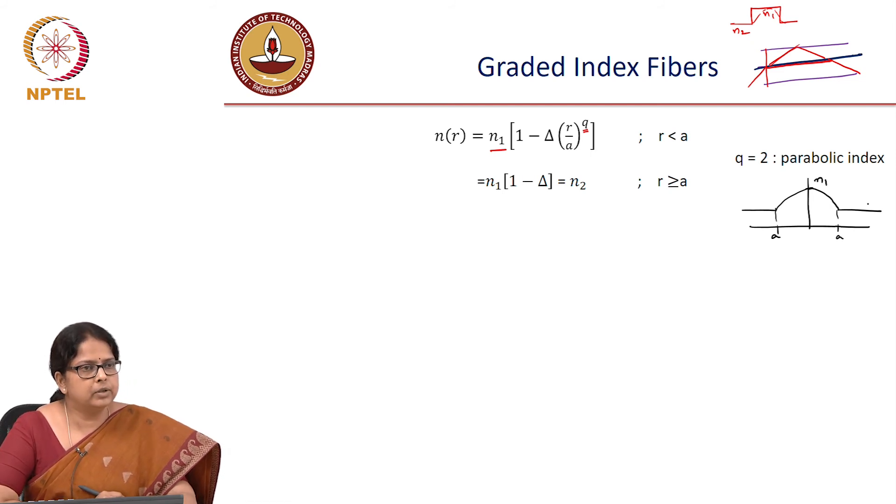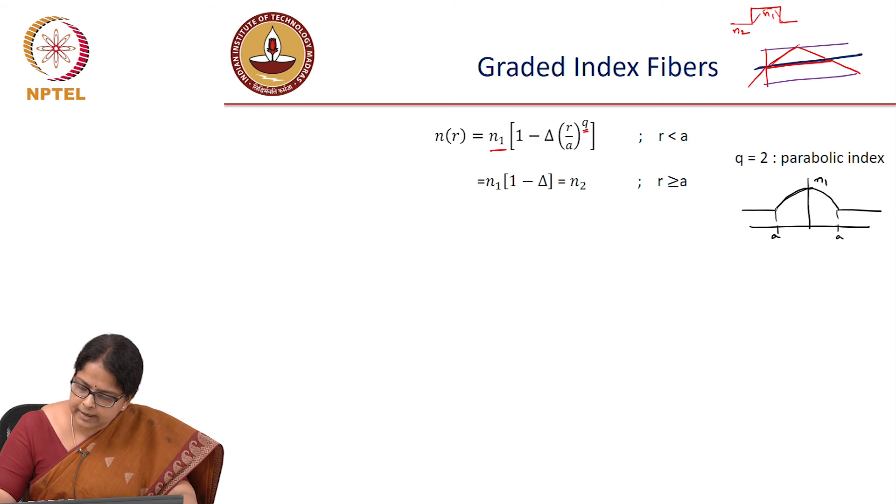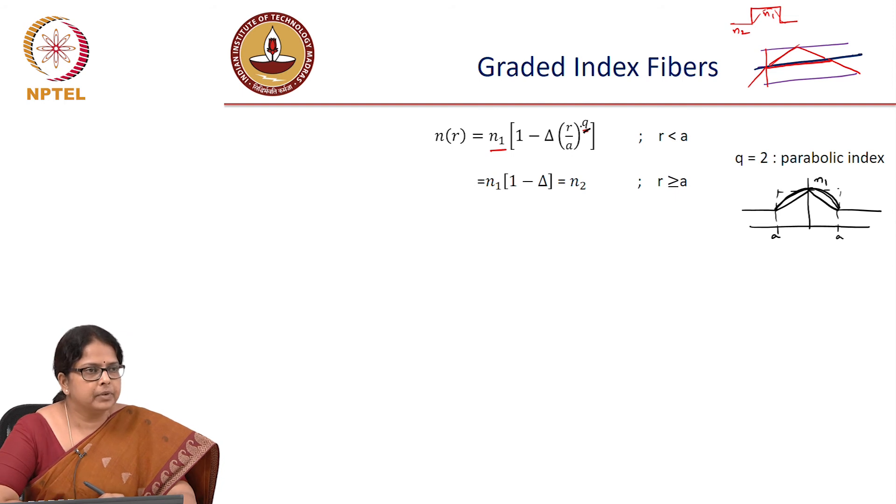So the refractive index profile of a graded index fiber is going to look like this. For R equal to 0, you have N1 and R is equal to A, you have 1 minus delta and R greater than A, you have N1 times N1 into 1 minus delta. It is like this. This is how the profile looks like. Now whether this profile is parabolic in nature or whether it is triangular in nature or one extreme is, of course, the step index fiber, that is decided by your Q.